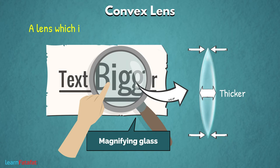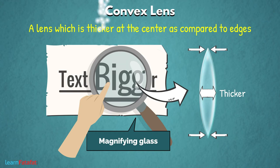Such a lens which is thicker at the center as compared to edges is called as convex lens.